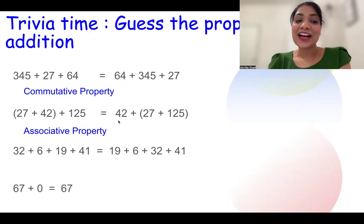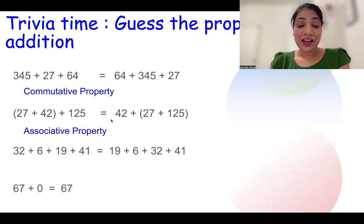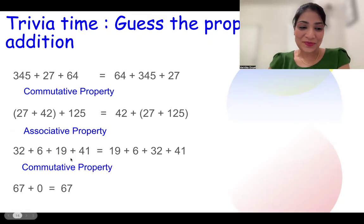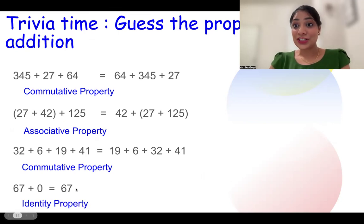How about this question? Oh my God, it has many numbers, but the addends are the same on both left and right side. Only they have moved around or the order has been switched. This is commutative property. And the last one, I'm adding zero to a number and it is staying the same. This is our identity property. Good job, guys.